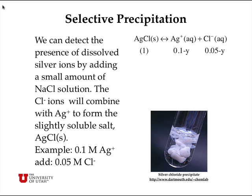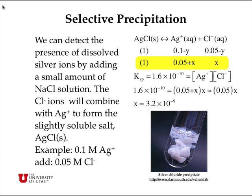That leads to a numerically unstable quadratic equation, so it's convenient to recast the problem. First, assume all the chloride precipitates to silver chloride, reducing silver ion from 0.1 to 0.05 moles per liter. Then allow a little silver chloride to redissolve, forming slightly more silver ion and chloride ion concentration X. The Ksp expression becomes 0.05 plus X times X, approximated as 0.05 times X. Solving gives X equal to 3.2 times 10 to the minus 9 moles per liter — the equilibrium chloride concentration — while silver remains essentially 0.05 moles per liter.